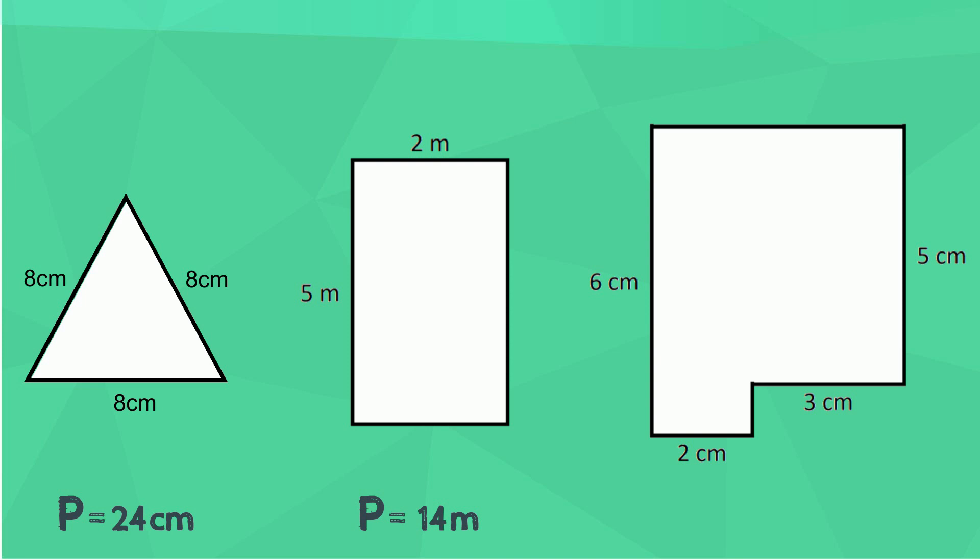Now for the irregular shape. First we must work out the length of these two sides, because they're not given. The length of this side is 2 centimeters plus 3 centimeters, which is 5 centimeters. We know that this side is 5 centimeters. This short side must be 1 centimeter, to give us a total of 6 centimeters. Adding the sides together, we get a perimeter of 22 centimeters.